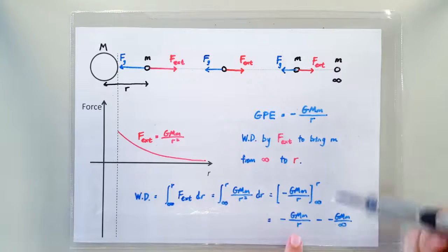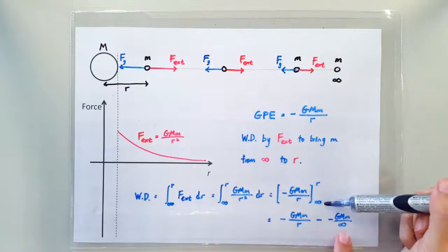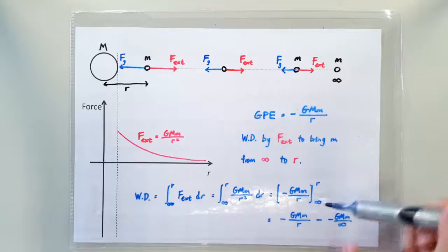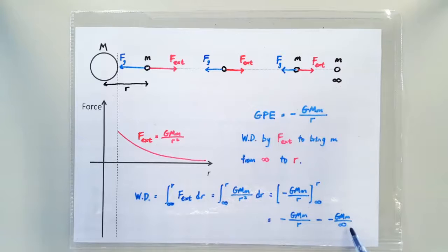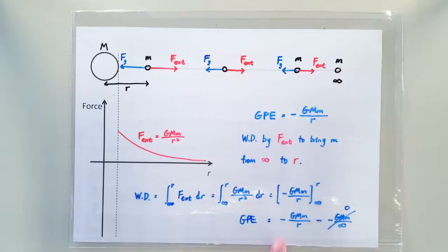So we have negative GMM over R minus negative GMM over infinitely large number. So negative GMM over infinitely large number is of course zero. So we get the expression that the GPE is actually negative GMM over R because this term here is zero.